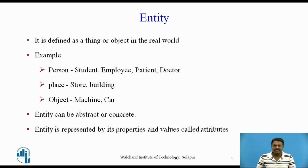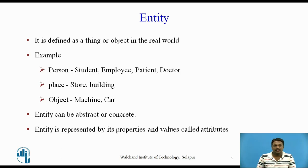An entity is a thing or object in the real world that is distinguishable from all other objects. For example, a person — it may be a student, employee, patient, or a doctor. A place — it may be a store or building. An object — it may be a machine or a car. An entity can be concrete like a person or a book, or it can be abstract like a course or course offering.